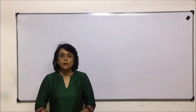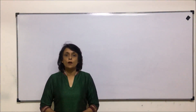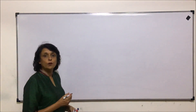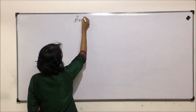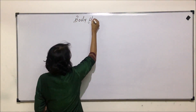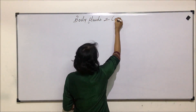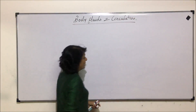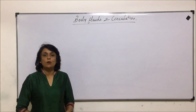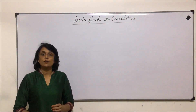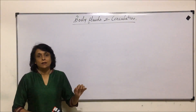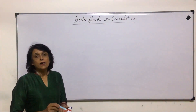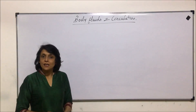We are starting with a new chapter in the unit of human physiology. The chapter is about circulation and the title is 'Body Fluids and Circulation.' This is the chapter in which we will be discussing blood, blood vessels, heart, structure of heart, and working pacemakers, blood pressure, ECG — all these things.